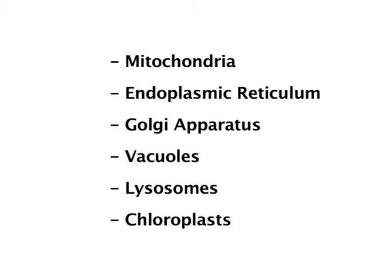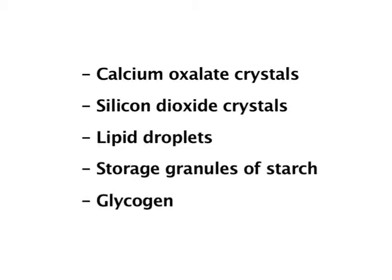Let us now conclude the topic. Eukaryotic cells are characterized by the presence of a nucleus surrounded by the nuclear membrane and the presence of other membrane-bound organelles. The organelles are membrane-bound subcellular structures like mitochondria, endoplasmic reticulum, Golgi apparatus, vacuoles, lysosomes, and chloroplasts, and they perform specific functions that are necessary for the survival of the cell. In addition to the organelles, the cytoplasm of eukaryotic cells also contains tiny particles called cytoplasmic inclusions suspended in the cytosol, including calcium oxalate crystals, silicon dioxide crystals, lipid droplets, storage granules of starch, glycogen, etc., which are not bound by membranes and do not carry out any metabolic activity.